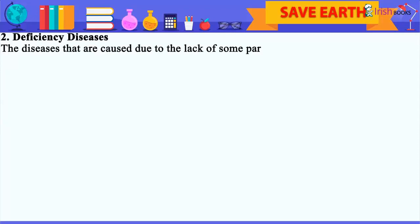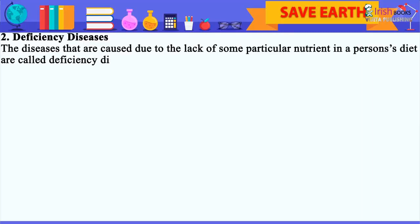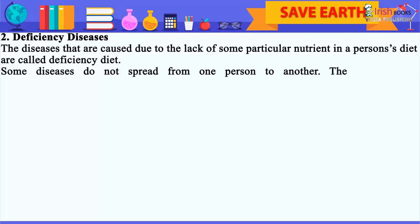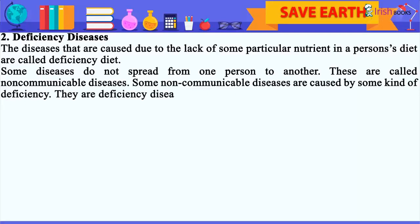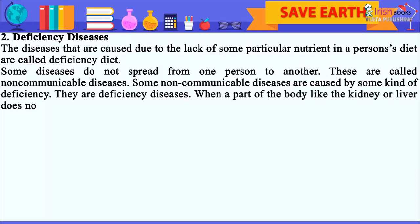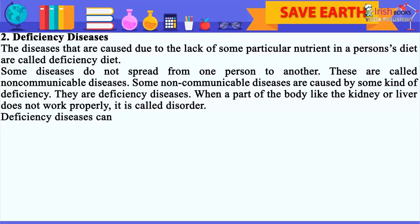Deficiency diseases: The diseases that are caused due to the lack of some particular nutrient in a person's diet are called deficiency diseases. Some diseases do not spread from one person to another - these are called non-communicable diseases. Some non-communicable diseases are caused by some kind of deficiency and they are called deficiency diseases. When a part of the body like the kidney or liver does not work properly, it is called a disorder. Deficiency diseases can be divided into three groups: 1. Protein caloric malnutrition, 2. Vitamin deficiency diseases, 3. Mineral deficiency diseases.